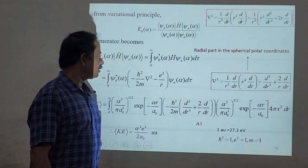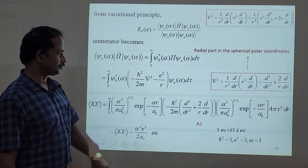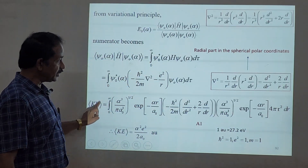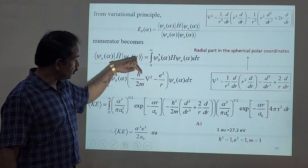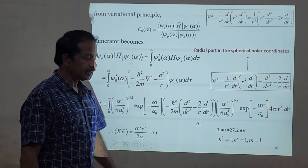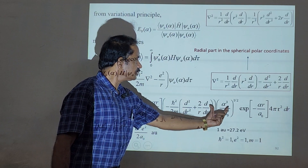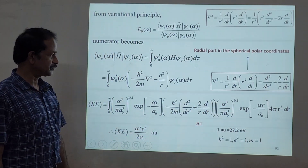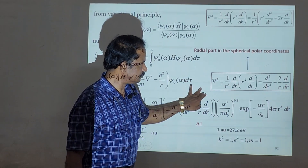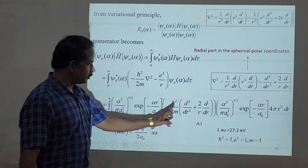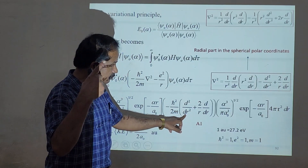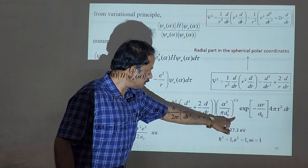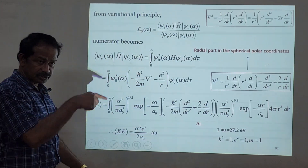Multiplying the del² operator by the wave function ψ(r), we differentiate twice with respect to r. Differentiating once gives one expression, and differentiating again gives the second derivative. After substituting and evaluating, the kinetic energy contribution gives α²e²/(2a₀).